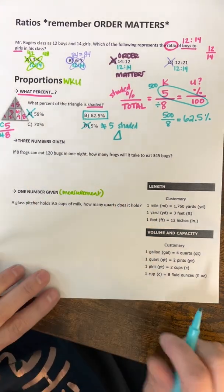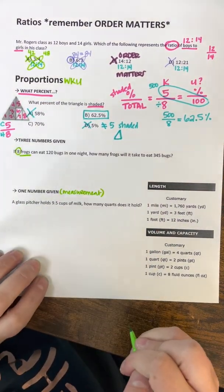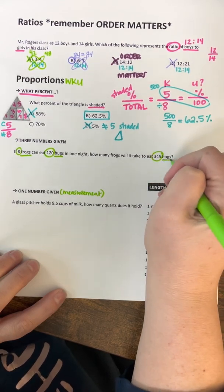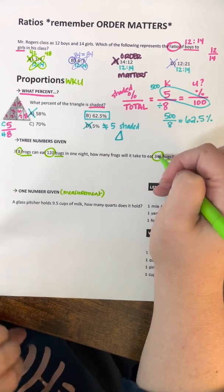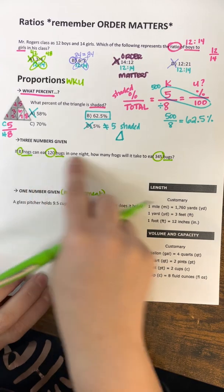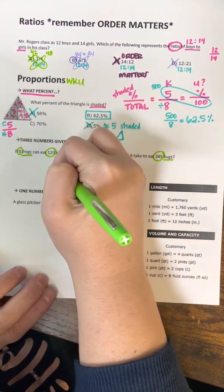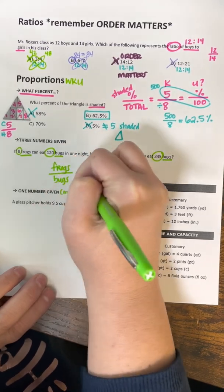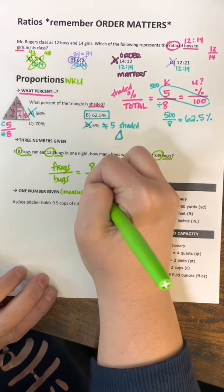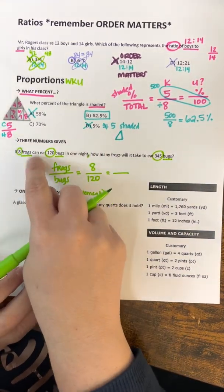All right, now let's talk about this one, when you have three numbers given. When three numbers are given in your problem. So if I read this problem, it says if eight frogs, so eight what? Eight frogs can eat 120 bugs. 120 what? Bugs. It says how many frogs will it take to eat 345 bugs. 345 what? Bugs. Y'all, the word after the number is so important. So you can clearly see that we have been given three numbers: 8, 120, and 345. And of those three numbers, I have frogs, bugs, bugs. So I know I have two matches, bugs, bugs. So this is going to be a WKU. My words are frogs and bugs.